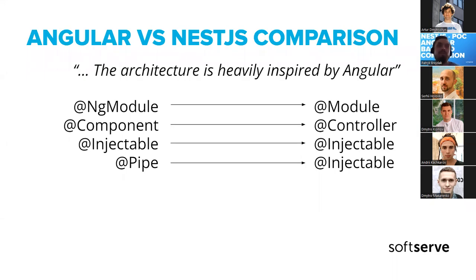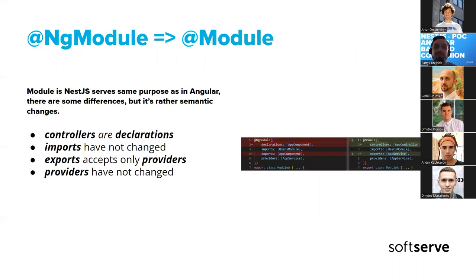Let's get to the interesting part — NestJS is inspired by Angular. On the official GitHub page there is information about how it's built. The architecture is heavily inspired by Angular, so let's see how heavily. Our first stop is declaring a module, as we normally do in Angular. As we can see in the attached code, it almost looks like an Angular module. What changed is the decorator name — from NgModule to Module.